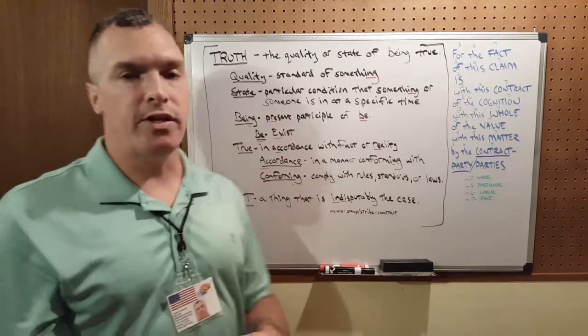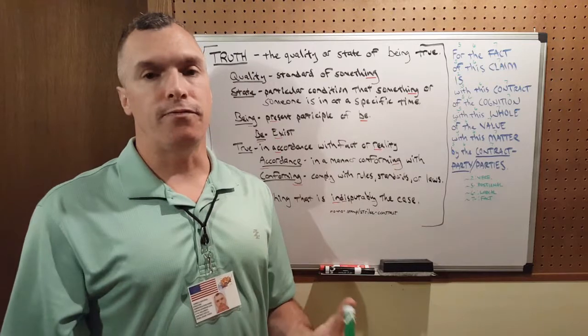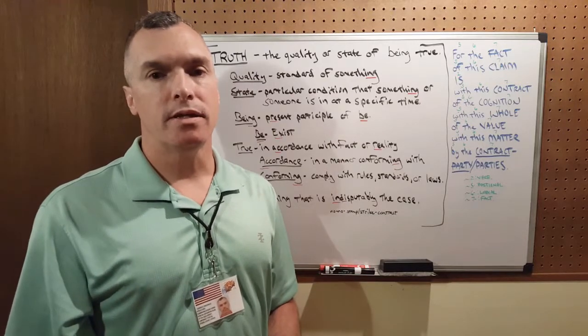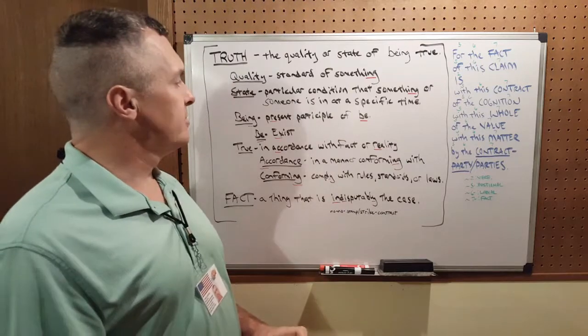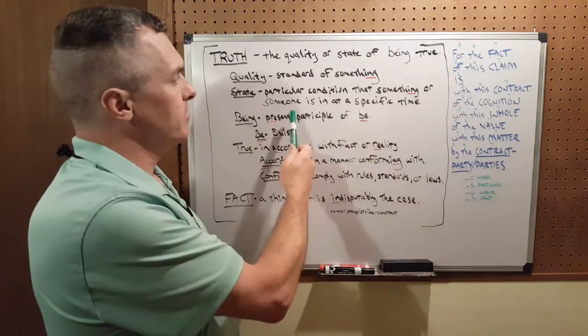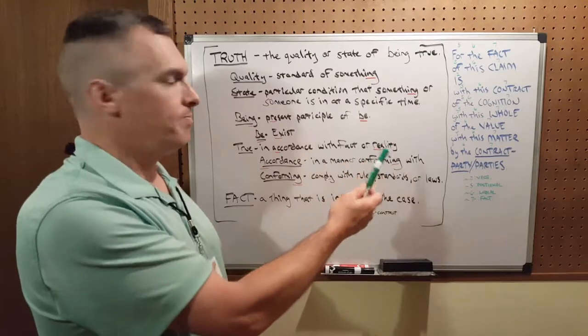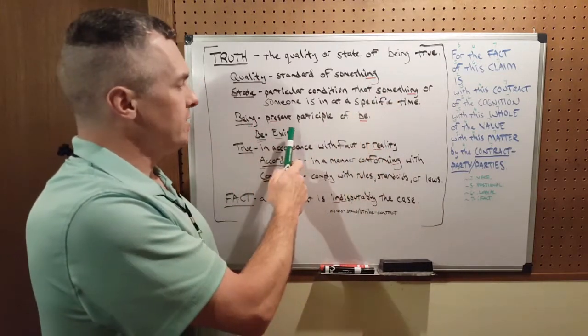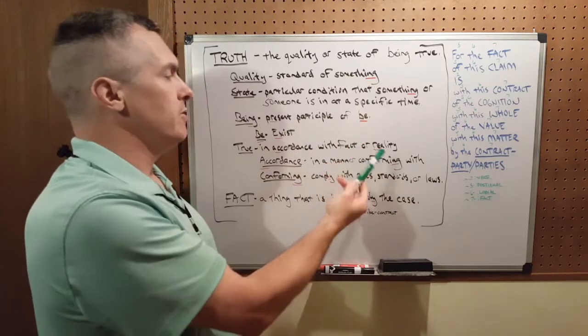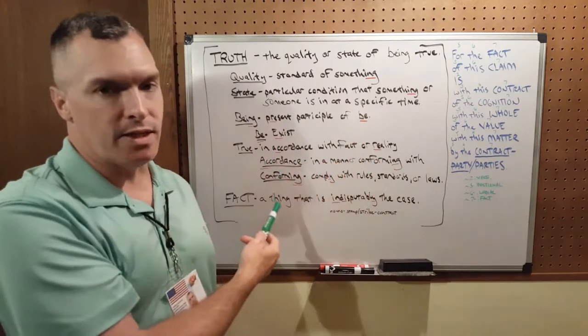So you can be in a state of fear, a state of happiness, the state of Arizona. They're all states that something or someone is in at a specific time. The next key word is being. Being is present participle of be. So then I look up being and being means exist.